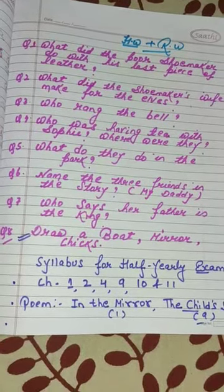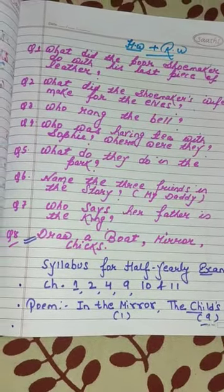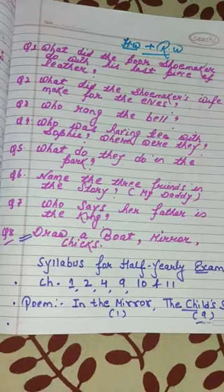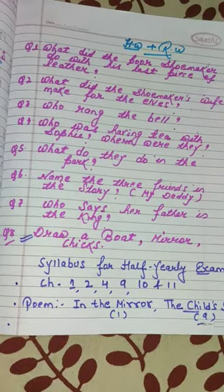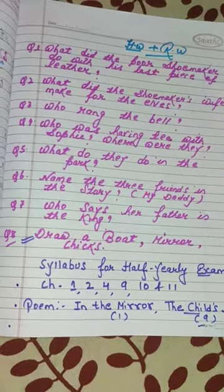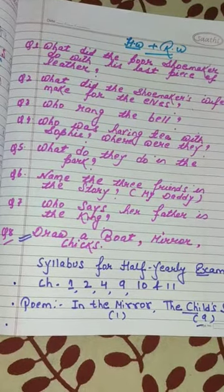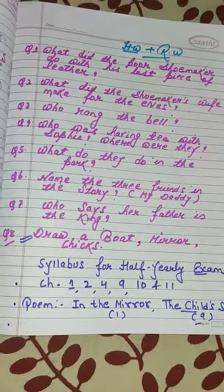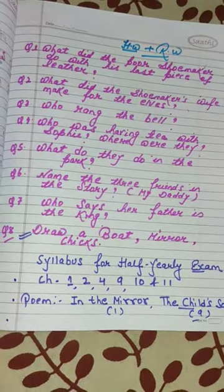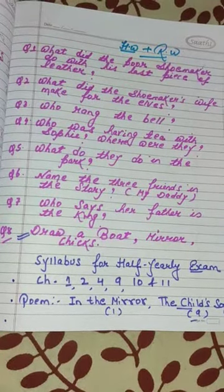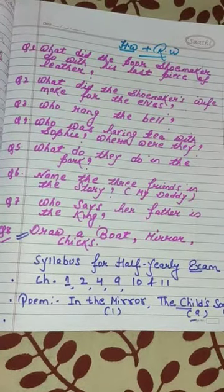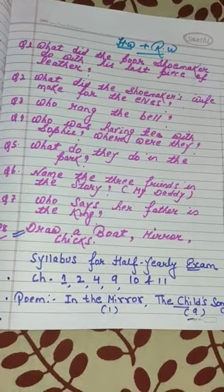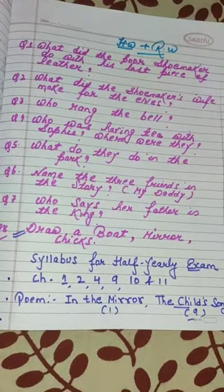Question number 6: Name the 3 friends in the story 'My Daddy'. Question number 7: Who says her father is the king?